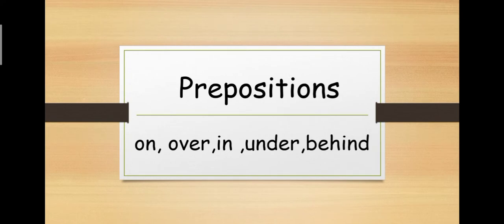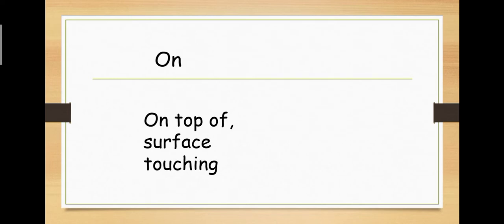Prepositions that we will study today are on, over, in, under and behind. On, on matlab, upar, means when something is kept on other thing in a way that their surface is touching. Yani, jab ek chiz dousre chiz ke upar rakhi jaati hai, is tarikay se ki unke surface ek dousre se touch kar rahe haon. So, in that case, we use on.